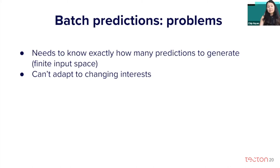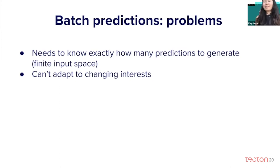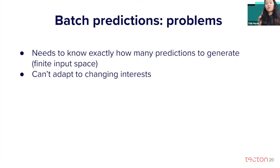Another problem with batch predictions is that they can't adapt to changing interests. For example, you've been watching a lot of horror movies on Netflix, so those are your recommendations. But then you're feeling happy today and want to watch a comedy. You'd imagine Netflix would be able to change its recommendations to show you more comedy movies, but actually Netflix can't — it can only update recommendations the next time it generates the next batch.